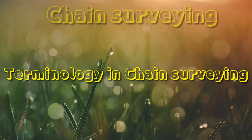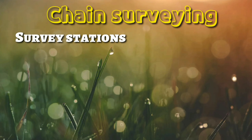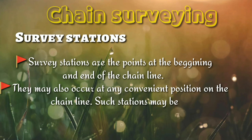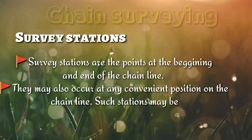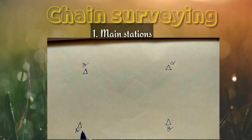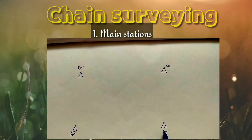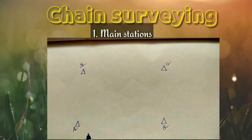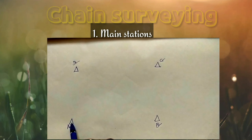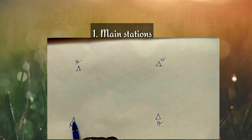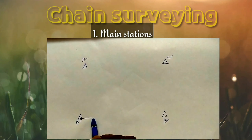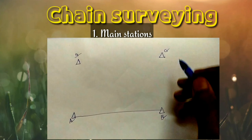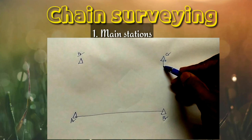Now let us see the terminologies in chain surveying. For a given area, we identify main stations, subsidiary stations, and tie stations. The boundary stations are known as main stations. For example, in a given plot, A, B, C, and D are the main stations.